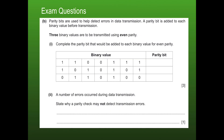Another parity question: three binary values are transmitted with even parity — complete the parity bit for each. First value has five true bits (odd) — parity bit is one. Second value has four true bits (even) — parity bit is zero. Third value has three true bits (odd) — parity bit is one.